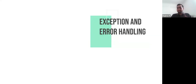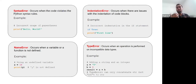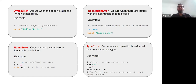Moving on, we have something called exception and error handling. You can have different types of errors in your code — code is prone to errors. You should know how to identify errors in your code so that you can debug them easily. This is very important because you cannot have another person solve your code every time you get an error. You should know the ways in which you can solve the error, and the first step is to identify the error that you have.